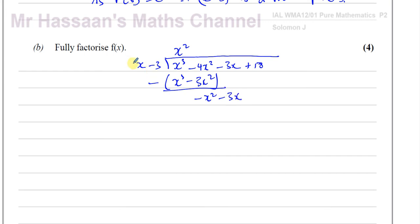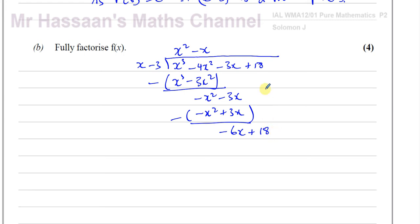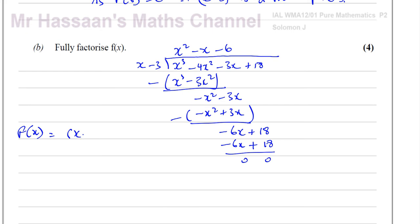Continue the process: x into minus x squared goes minus x times. Minus x times x is minus x squared; minus x times minus 3 is plus 3x. Subtract again: that gives 0 for the x squared terms, and minus 3x minus 3x gives minus 6x. Be careful with signs — it's very important. Bring down the 18. Then x into minus 6x goes minus 6 times. Minus 6 times x is minus 6x, and minus 6 times minus 3 is plus 18, giving remainder zero. So f(x) equals x minus 3 times x squared minus x minus 6.